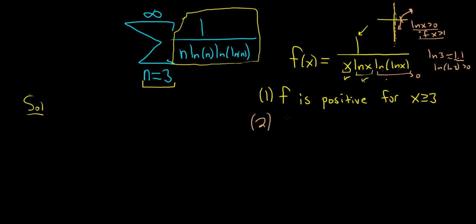The next step is to note that it is continuous. So f is continuous for x greater than or equal to 3. Nothing here is undefined when x is bigger than or equal to 3. In the denominator, you have a product of continuous functions and a composition. So everything is continuous. Continuous over continuous is continuous. So there's no issues, there's no holes, there's no asymptotes when x is greater than or equal to 3. So everything is nice and pretty.